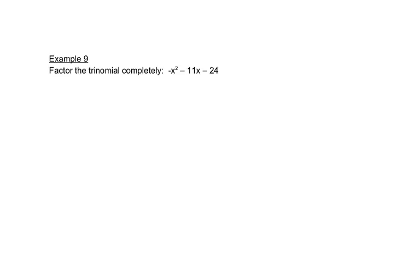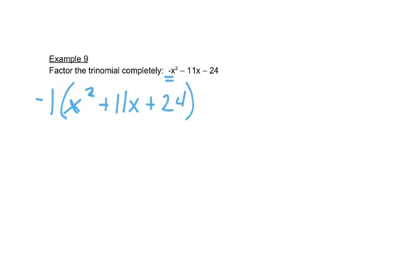Here's another example. In this example, we have a negative in the very front. It's in standard form with the X squared first, but we don't like that negative out in front. So we'll put a negative 1 in front of the parentheses, like we're factoring out a greatest common factor. When we do that, it changes the signs because we're really dividing each piece by negative 1. So it makes a positive X squared, a positive 11X, and a positive 24. Now we can see that A is 1, B is 11, and C is 24.